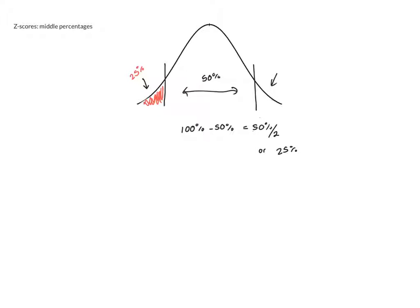This process can be used any time we're looking for a middle percentage. I take the center percent, 100 minus that, and divide it by 2 to get just the left end tail. Now that we've figured out how to find the lower end, let's go ahead and do an example.